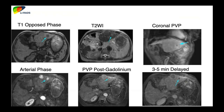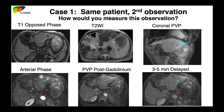This same patient had a second observation with additional findings: on opposed phase images it's dark compared to surrounding parenchyma, indicating signal drop — an ancillary feature for malignancy. There's also intermediate T2 signal intensity. On arterial phase, portal venous, and delayed images, it has the same imaging characteristics as the first observation. The question is: can you call this LIRADS 5? The first key question is — how big is it, and how do we measure it?